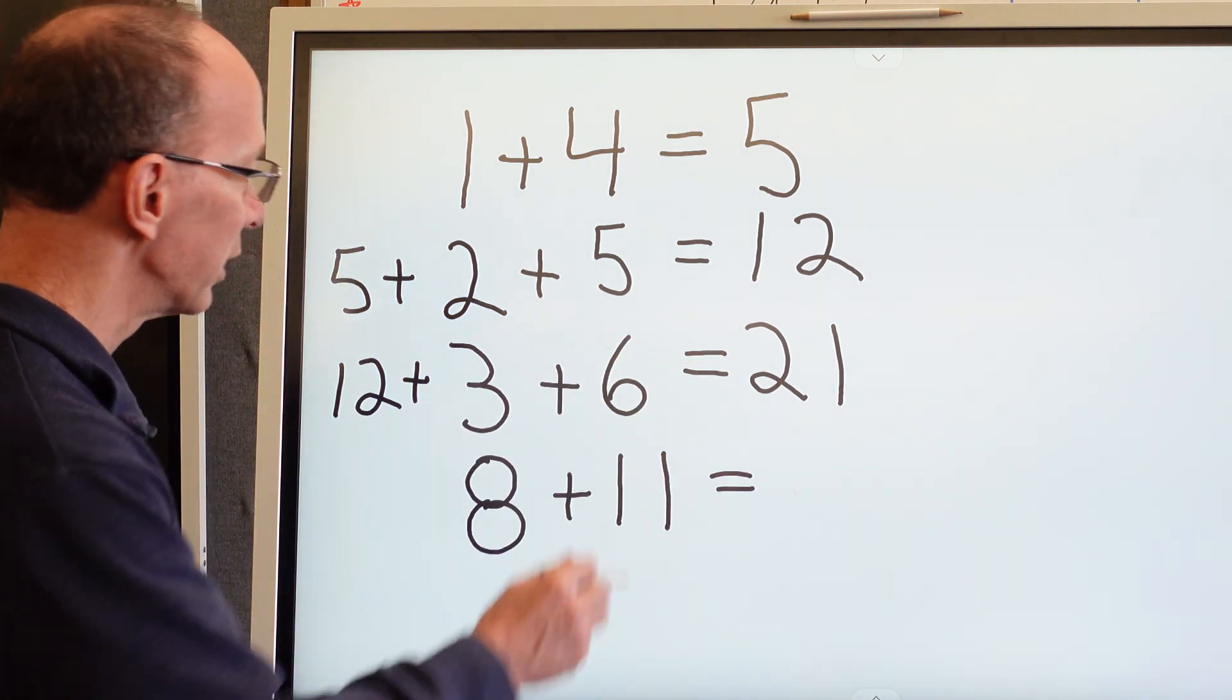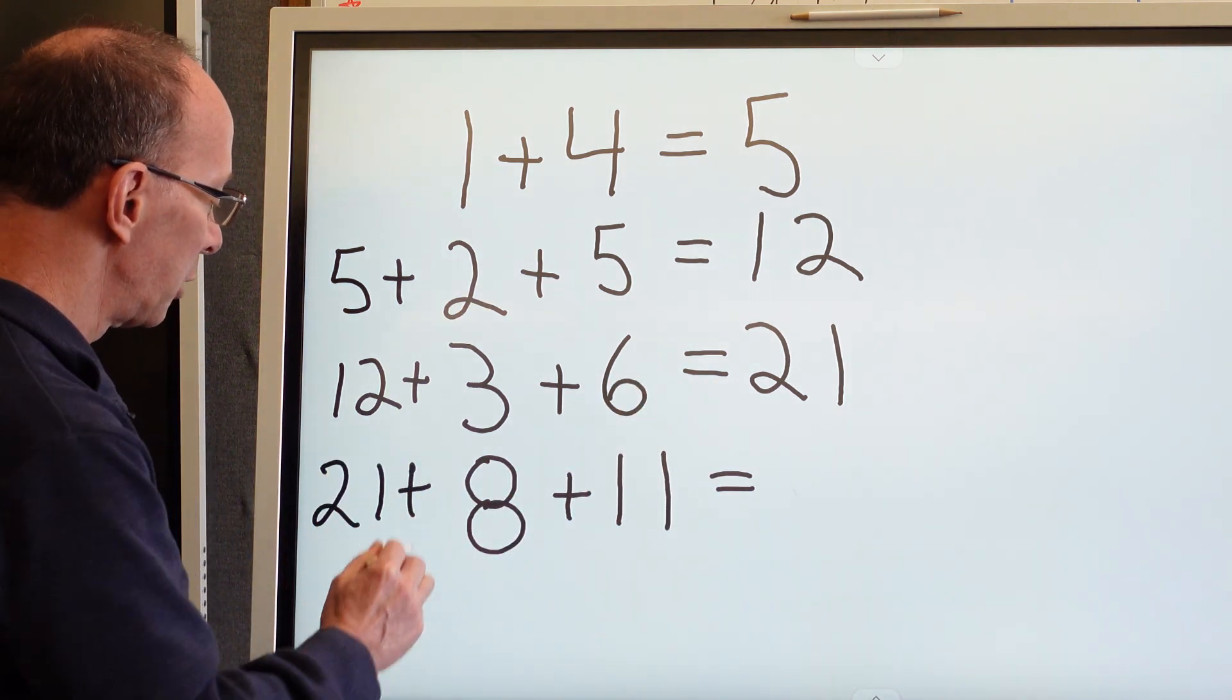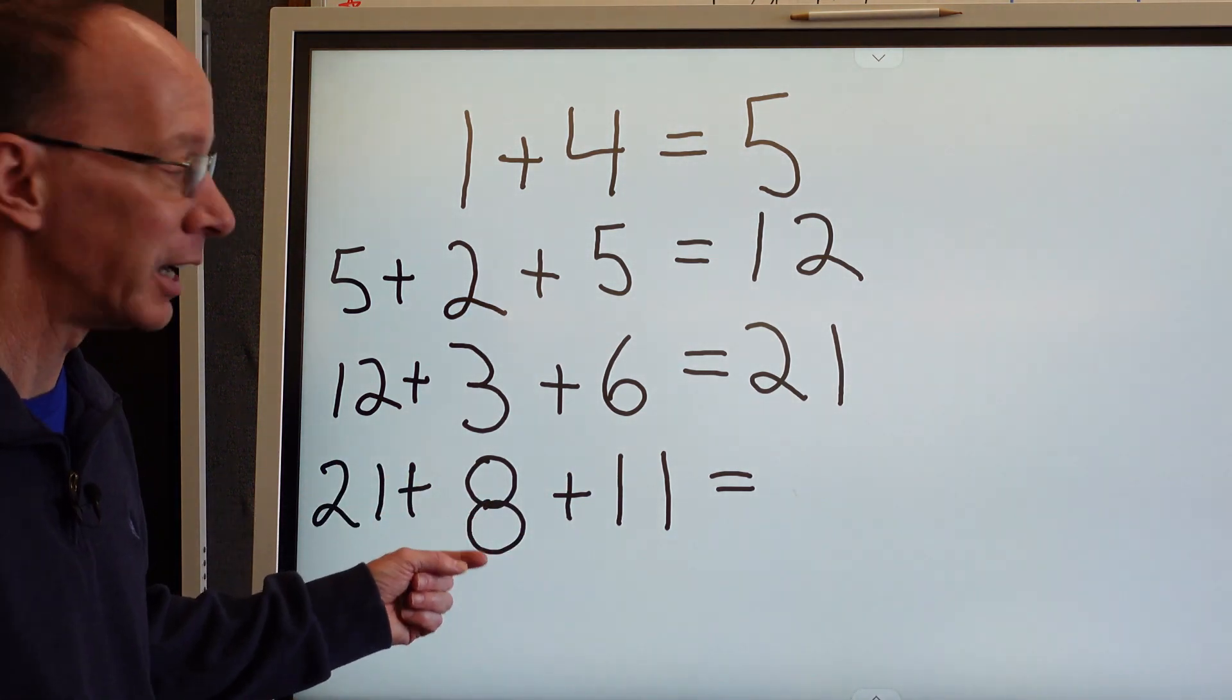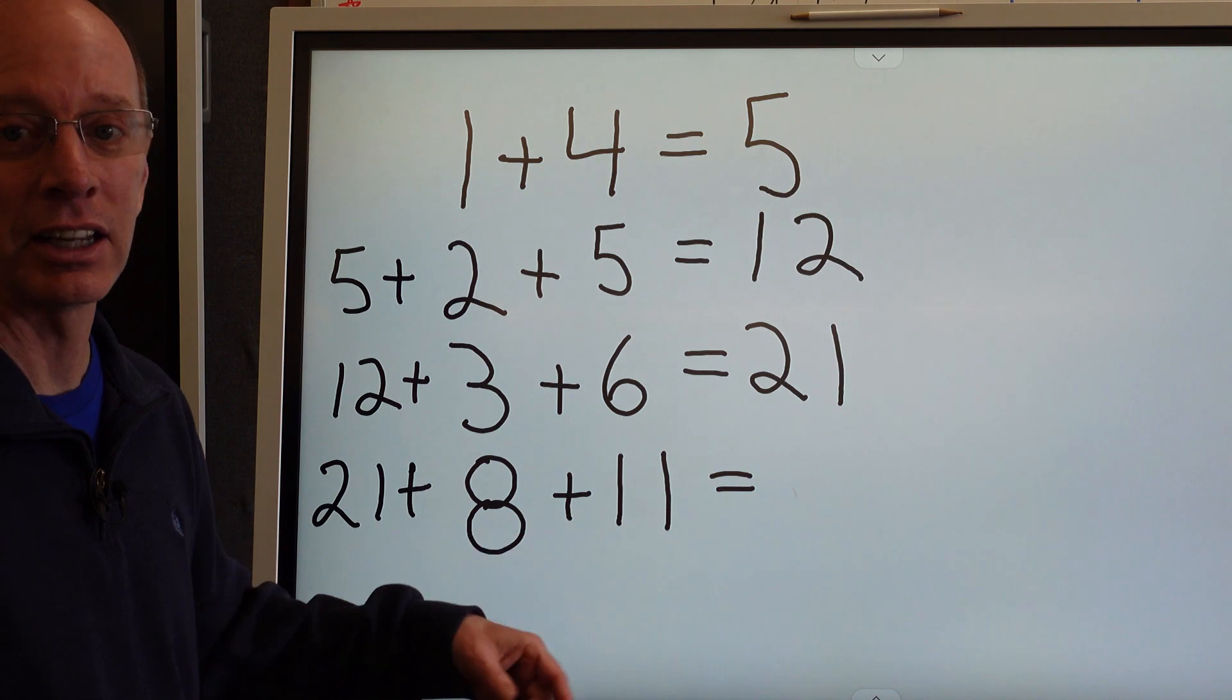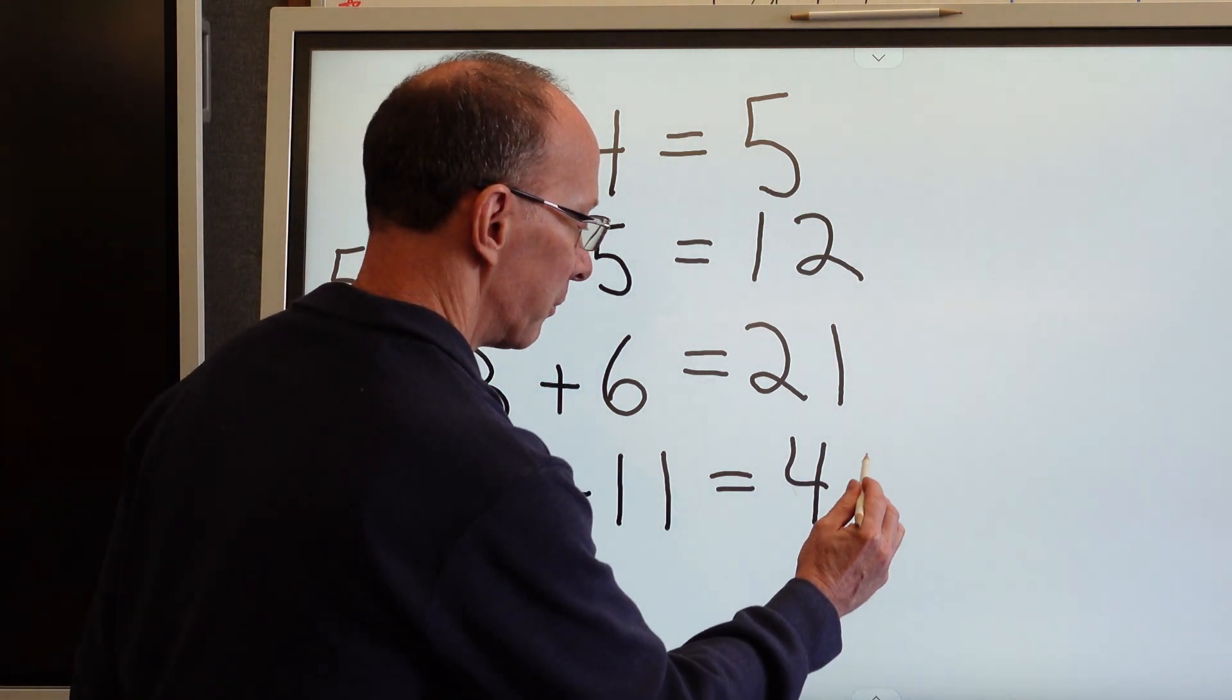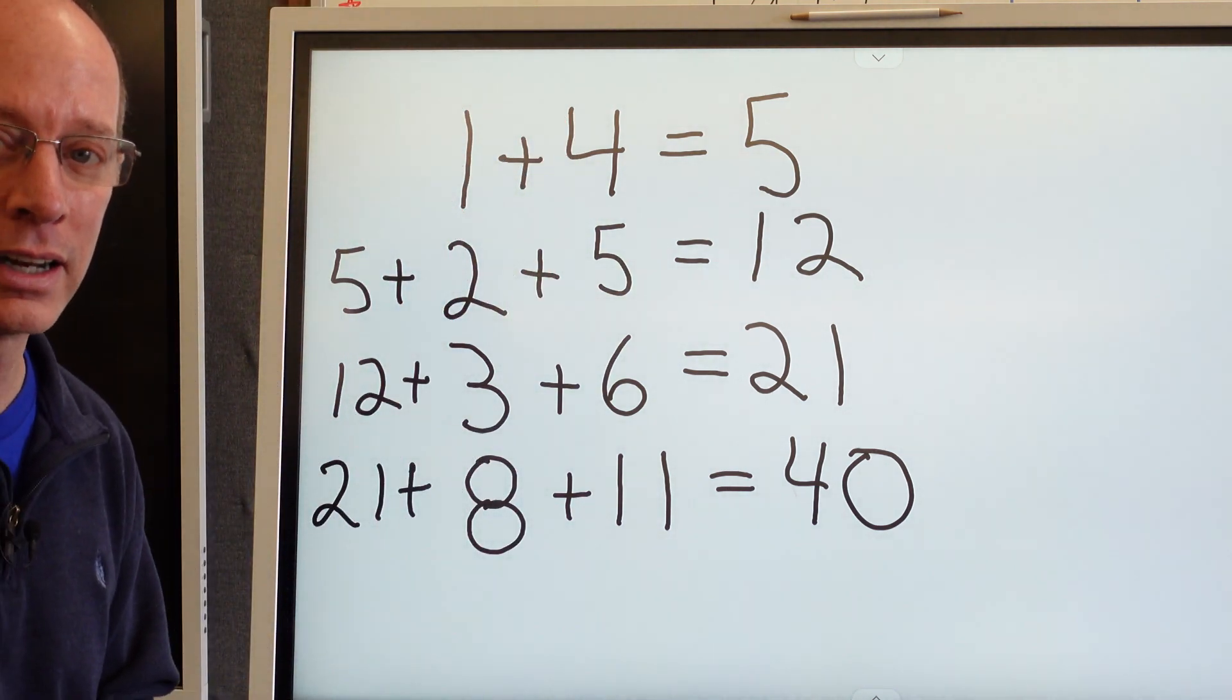12 plus 3 plus 6 would equal 21. So then we're going to take 21 and put it over here. 21 plus 8 plus 11, so 21 plus 8 is 29, 29 plus 11 equals 40. So we're going to put 40 right here. That would be one way.